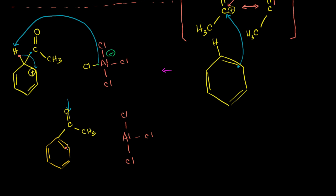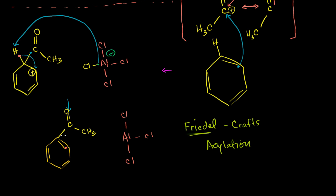We've just acylated this benzene ring, and that's why this mechanism is called Friedel-Crafts acylation. Friedel was actually a former president of MIT — he did not have a PhD, but because he discovered Friedel-Crafts acylation and alkylation, they made him president of MIT. The ketone we've created is acetophenone, which is a common name for this molecule we learned in the first ketone video.